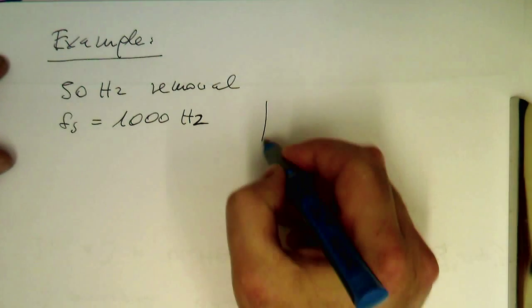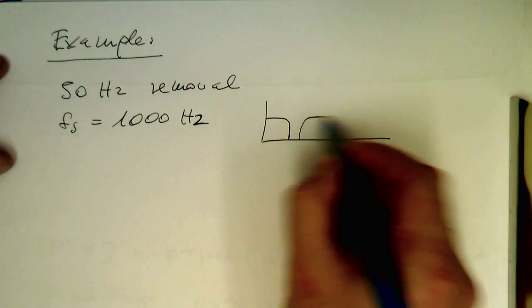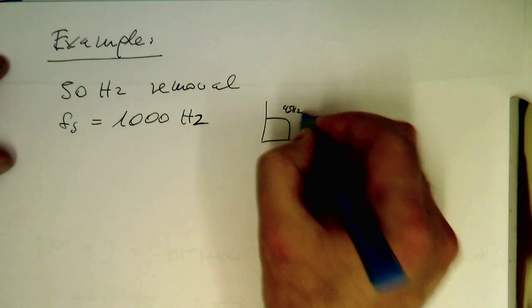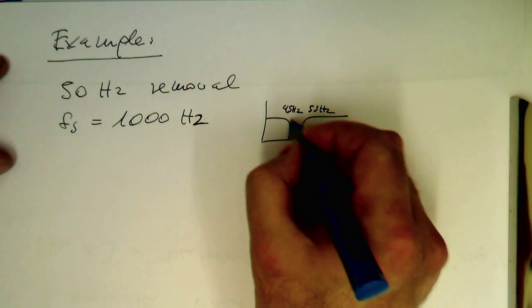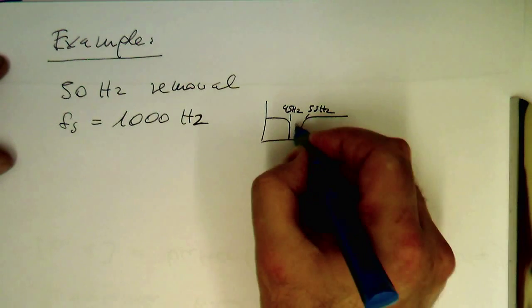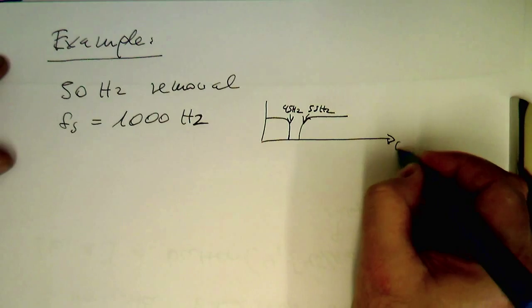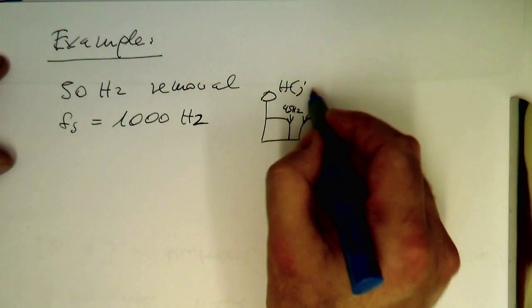And we would like to remove frequencies from roughly 45 Hz to 55 Hz. So that's our stop band here. So that's here Omega and that's here H of J Omega.